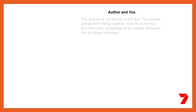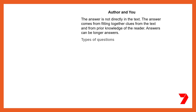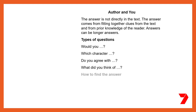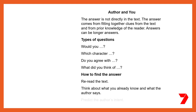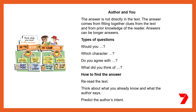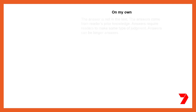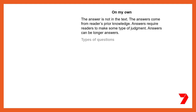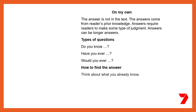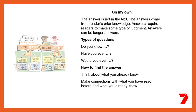The first 'in my head' strategy is 'author and me,' where the answer is partly in the book and partly in your head. The answer comes from fitting together clues from the text with things you already know. You may even need to predict why the author wrote the text and what they intended. The final 'in my head' strategy is 'on my own.' The answer to these questions is not in the text, and you may need to make a judgement based on your own prior knowledge.